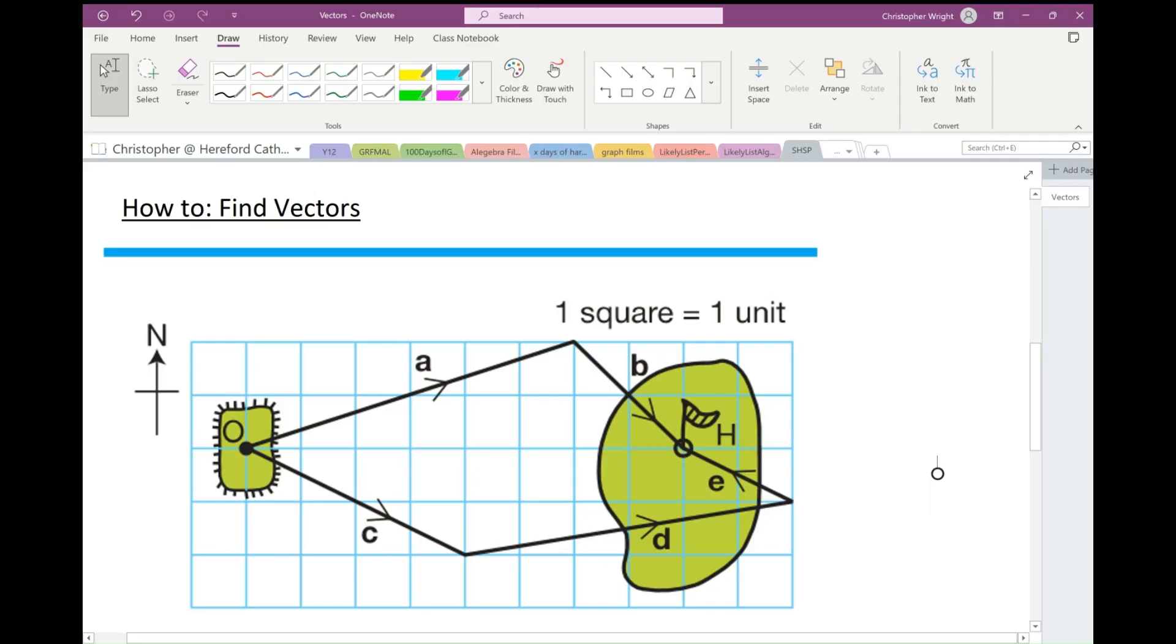Right here we're going to look at how to find vectors. Let's consider the ball starting at the tee on the golf course and being hit like this - that's the vector labeled a. The movement goes from the tee off O to this point which I'll call capital A.